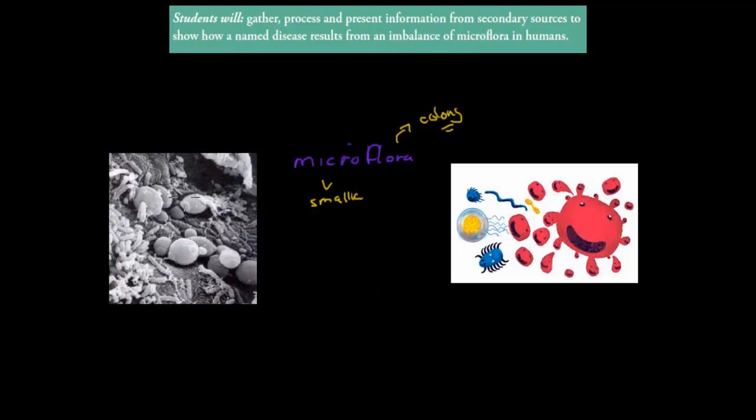So in this case, our microflora refers to colonies of bacteria or fungi or something else, which are usually on our skin, in our digestive tract, our mouth, in the vagina or the vaginal tract as well. Skin, digestive tract, mouth, vagina, and the respiratory tract.